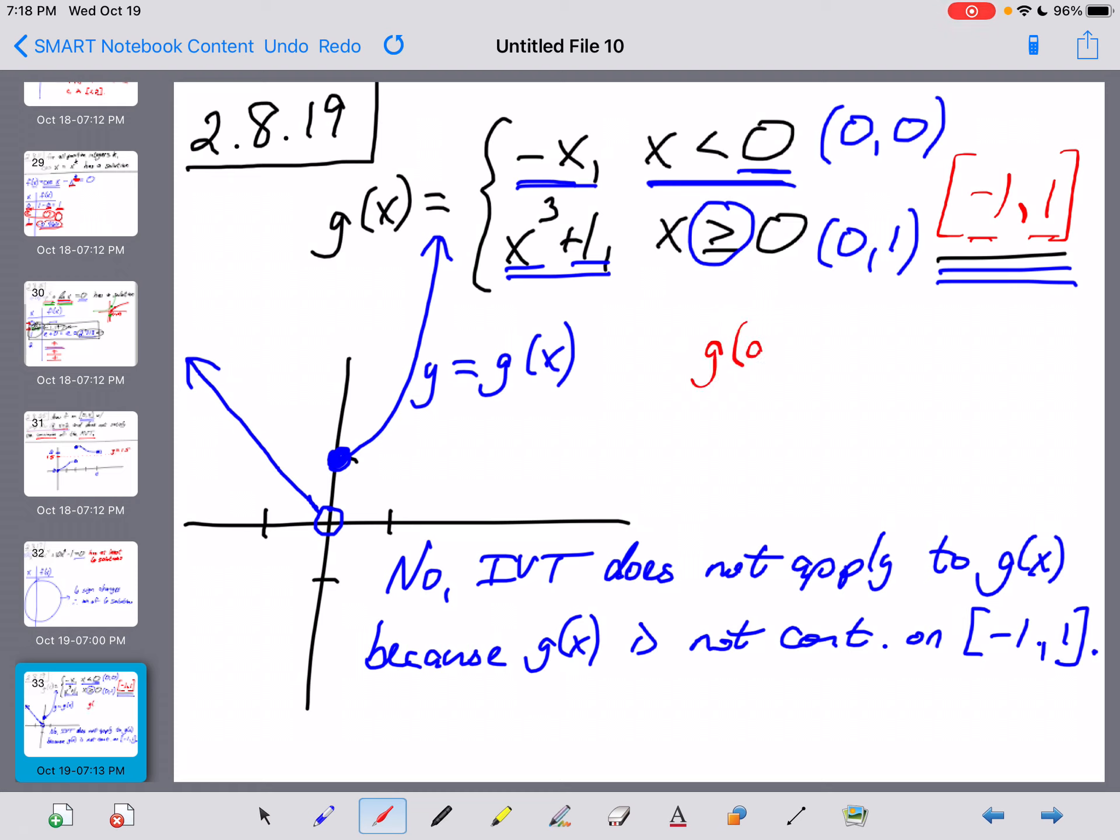So g of a, we would go ahead and put in a negative one to this function, which would apply right here. We're taking the opposite then of negative one. So that's g of negative one. And the opposite of negative one is one. We're basically getting this point right here as our starting point. And then for g of b, our b value is the right endpoint of the interval. That's g of positive one. And we would plug a positive one into the second part of this function. One cubed plus one is two. So that gets us the ordered pair one, two.